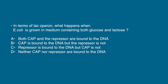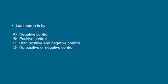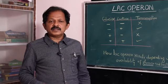Question 3: In the lac operon, lactose — A. acts as an inducer, B. acts as a repressor, C. binds to the operator, D. binds to the promoter. The answer is A: lactose binds with the repressor protein and cannot bind to the operator, allowing transcription to take place. Question 4: The lac operon is controlled by — A. negative control, B. positive control, C. both positive and negative control, D. no control. The answer is C. Positive control is by CAP protein and negative control is by repressor protein. That is all about the lac operon. Thank you for watching the video.